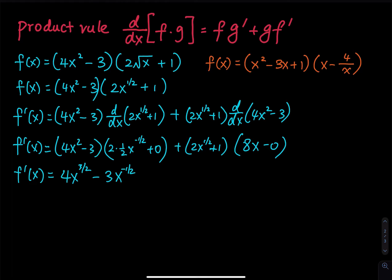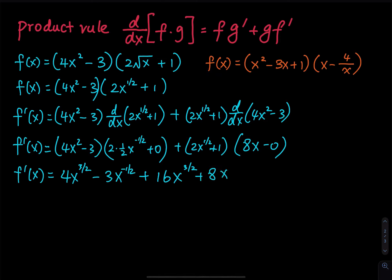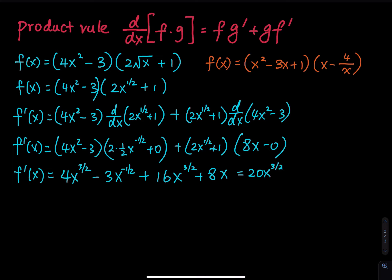The 4 and the 16 combine to give 20, so we get 20x to the 3 over 2, and then minus 3x to the negative one-half, and then plus 8x.